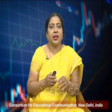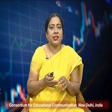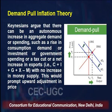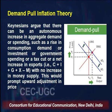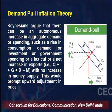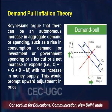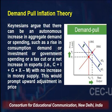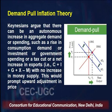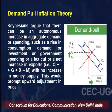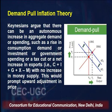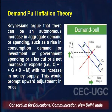Keynesians argue that there can be an autonomous increase in aggregate demand or spending — such as a rise in consumption demand, investment demand, government spending, a tax cut, or a net increase in exports — that is, C plus I plus G plus X minus M. With no increase in the money supply, if any of these components increases, that leads to an increase in price and prompts an upward adjustment in prices.